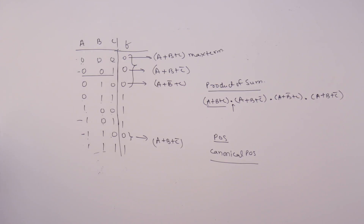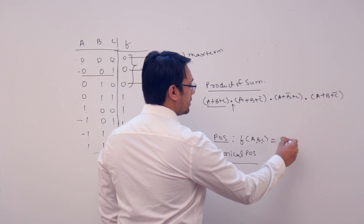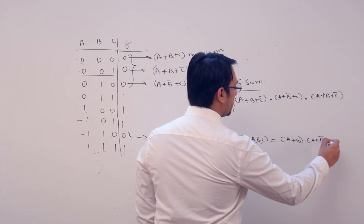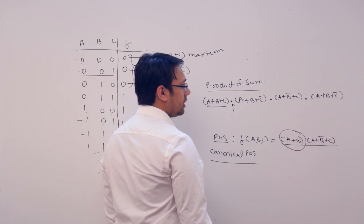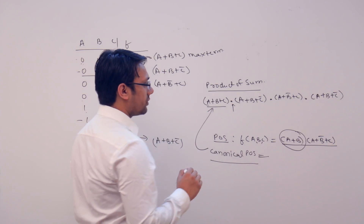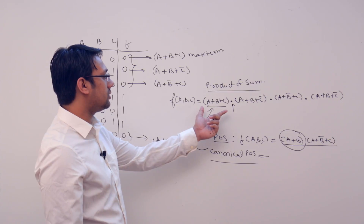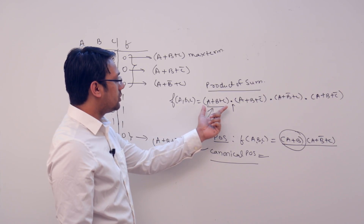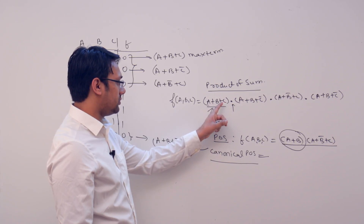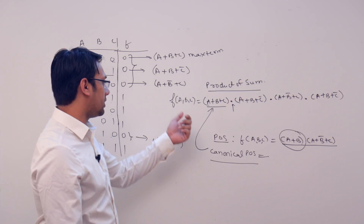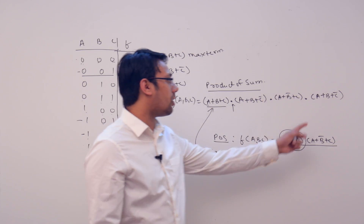What is a canonical product of sum? For example, in case of product of sum, if you have a function of variables a, b, c, we can represent a function like this: (a+b) · (a+b complement+c). Here in this product term, we don't have the variable c. In case of canonical product of sum, if the function is of three variables, every max term should assume a value 0 for exactly one combination of variables. In every max term, all three variables should be present.